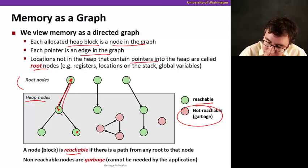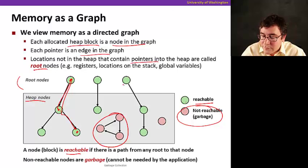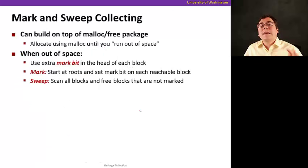So for example, so this one is green because there's a path, this one is green because there's a path through here, but now these ones are not reachable because there's no way to get from any of the root nodes to them. So these ones are the ones we're going to consider garbage or the ones that we're going to collect.